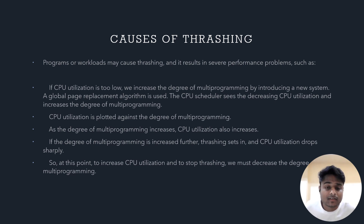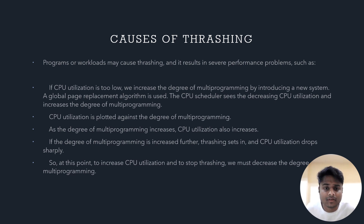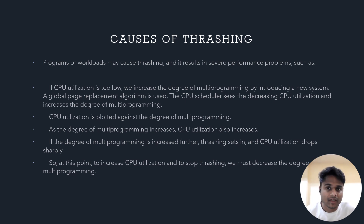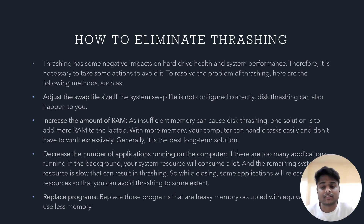Programs or workloads may cause thrashing with severe performance problems. If CPU utilization is too low, we increase the degree of multi-programming by introducing new processes. The CPU scheduler sees decreasing CPU utilization and increases the degree of multi-programming, causing more thrashing. As the degree of multi-programming increases, CPU utilization also increases, but this helps trigger more thrashing. If increased further, thrashing sets in and CPU utilization drops sharply. To stop thrashing, we must decrease the degree of multi-programming.